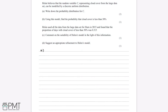Helen believes that the random variable C, representing cloud cover from the large data set, can be modelled by a discrete uniform distribution. Part A asks us to write down the probability distribution for C. For this question, we need knowledge of the large data set — specifically, that cloud cover is measured in octas, which has a range of zero to eight. This means cloud cover can only be an integer between zero and eight, with no decimal points, so it is discrete.